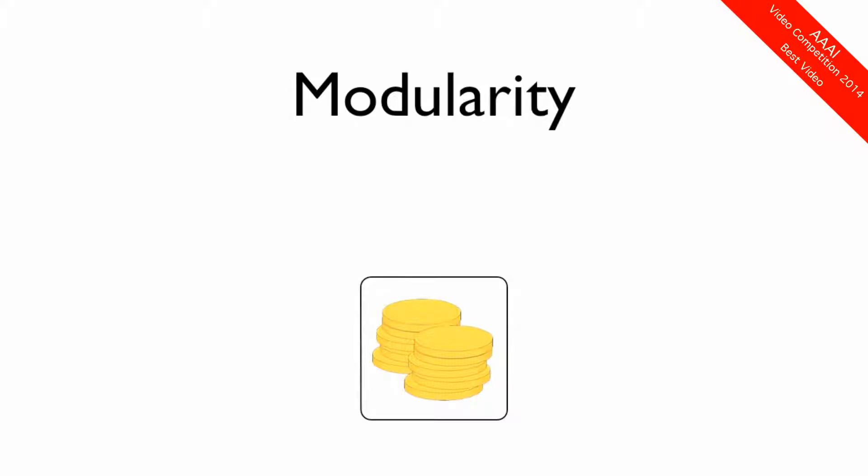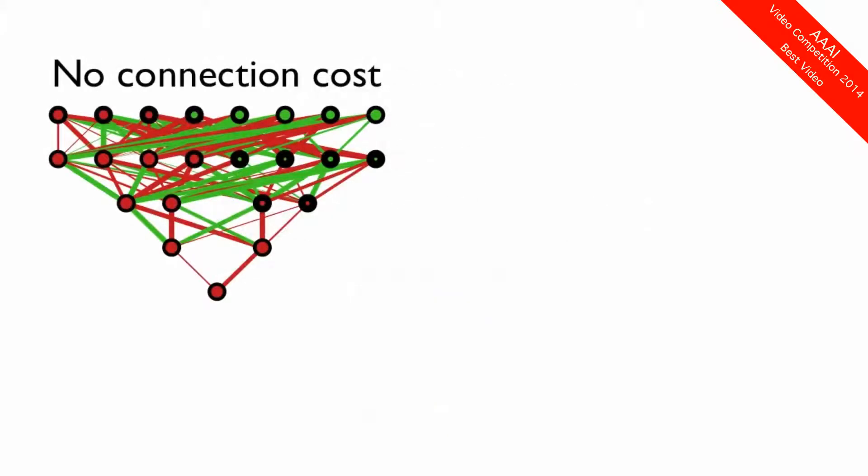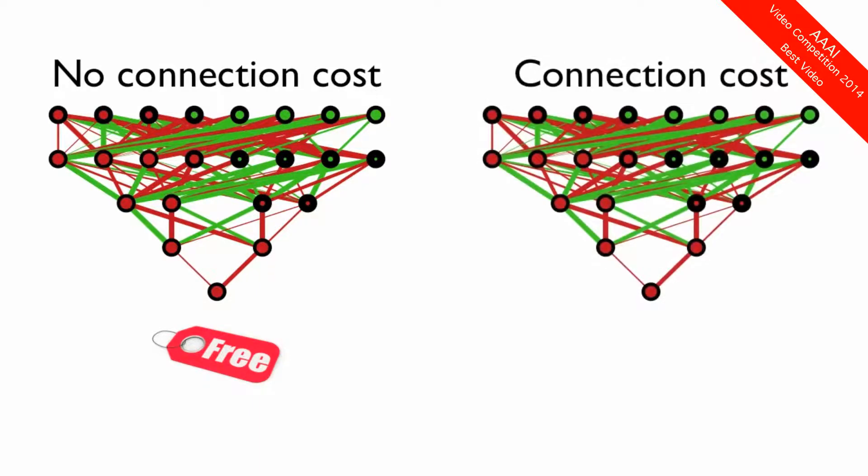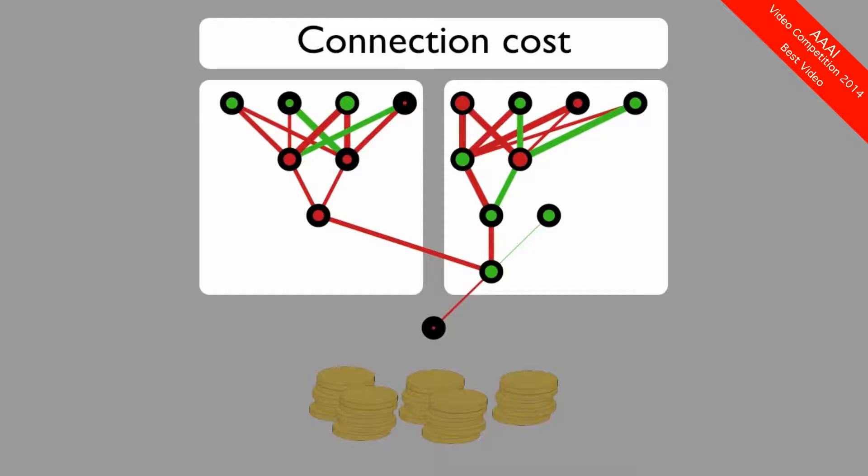Recent research has shown that modularity can be evolved by adding an evolutionary cost for connections. Usually, when evolving artificial neural networks, connections are free. The network can use as many connections as it wants as long as it solves the problem. Unfortunately, this often leads to highly entangled solutions. However, when networks have to pay some cost for each connection, they will reduce their number of connections, becoming more modular in the process.